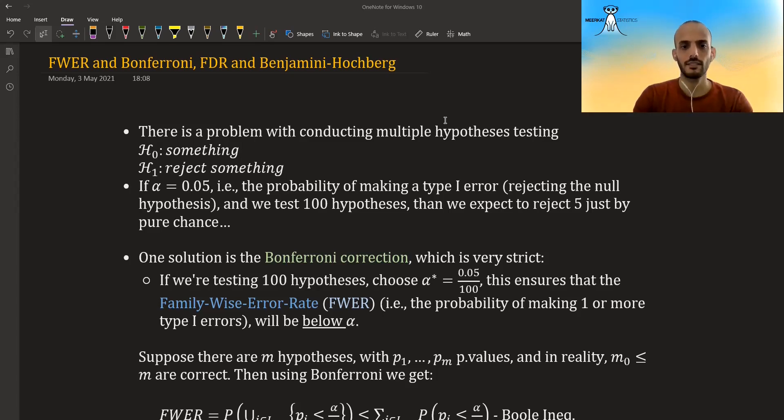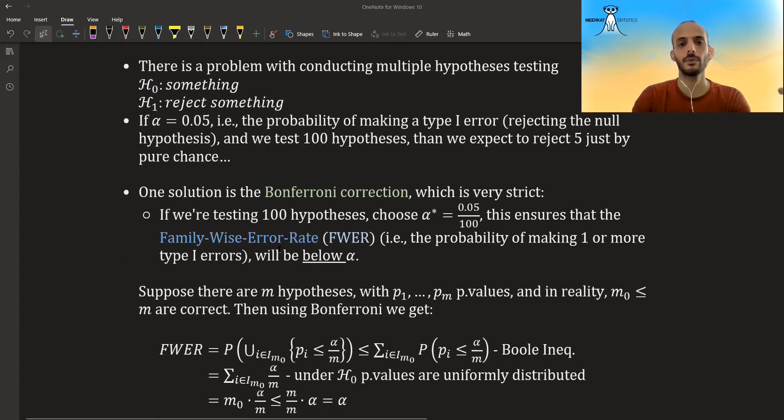Okay, so one solution is the Bonferroni correction, which is very strict. So if we're testing 100 hypotheses, we divide the alpha to be the original alpha divided by the number of hypotheses that we are testing. So in this case, it could be 0.05 divided by 100. And what this does, it ensures that the family-wise error rate (FWER), the error rate over all of the family of hypotheses that we are testing—all the 100 hypotheses—will be less than 0.05. This is basically the probability of making one or more type one errors over the entire 100 hypotheses that we are checking.